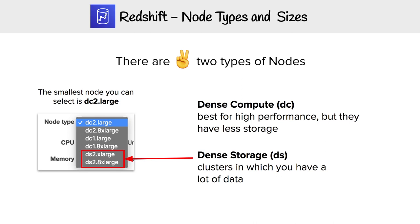Besides different cluster types, there are also different node types. We have DC — dense compute — and DS — dense storage. As the names suggest, one is optimized for computing power and the other is optimized for storage. Depending on your use case, you choose the appropriate node type. Note that there are no small or micro sizes — Redshift only starts at large, because you're working with large amounts of data.